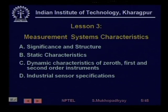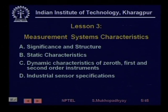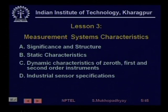We started with level 0 and first talked about the sensing system. We first took an abstract view of a measurement system and found what are the typical structures, the typical static and dynamic characteristics by which you can describe the performance of any abstract instrument.